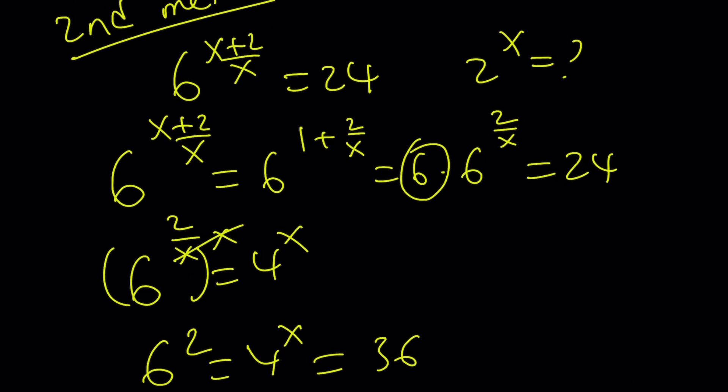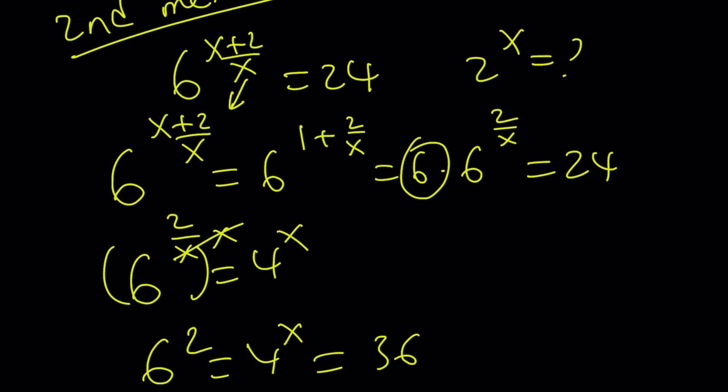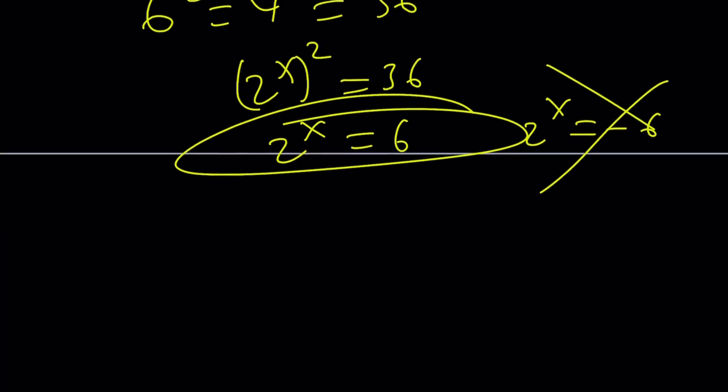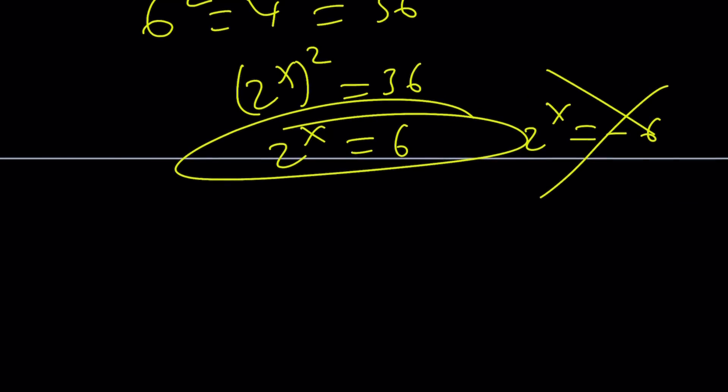So, what we did was split up this number, the exponent, and divide and raise both sides to the power x. And we got the answer. So, it's a little better. We didn't use ln. Let's quickly talk about the third method.